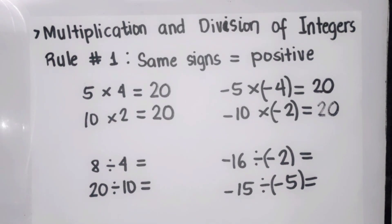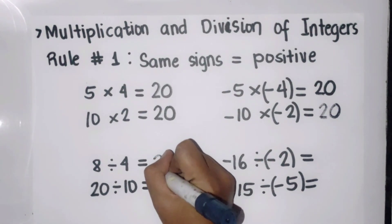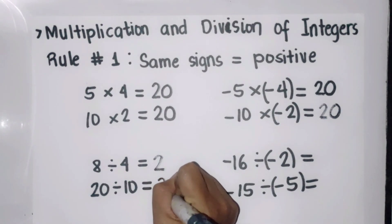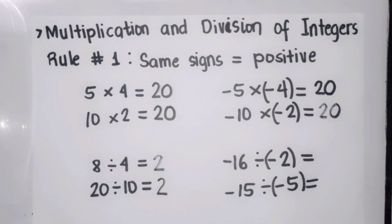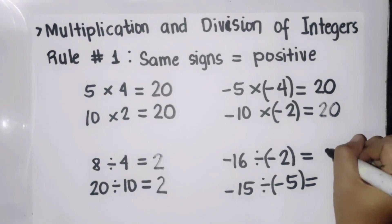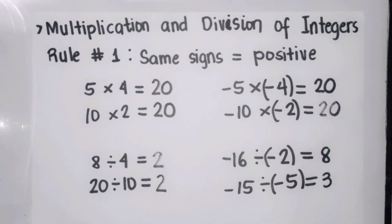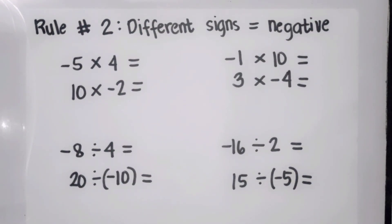More examples with the same sign rule: twenty divided by ten is two, and since both are positive the answer is positive. Negative sixteen divided by negative two: sixteen divided by two is eight — since both are negative, the answer is positive. Negative fifteen divided by negative five: fifteen divided by five is three — since both are negative, the answer is positive.